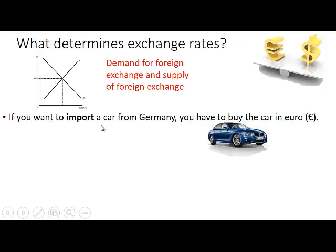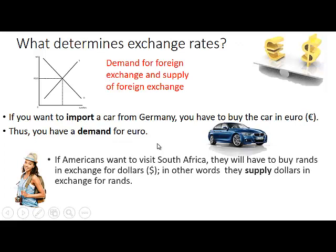What determines the demand? If you want to import a car from Germany, you have to buy the car in that country's currency. So if it's from Germany, you will need euros — therefore you have a demand for euros. And if foreigners, for example Americans, want to visit South Africa, they have to buy Rand in exchange for their currency. In other words, they will supply the foreign currency, or dollars, in exchange for Rand.